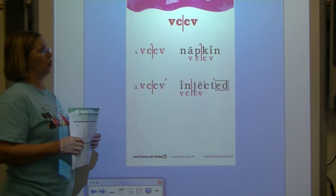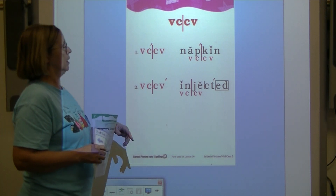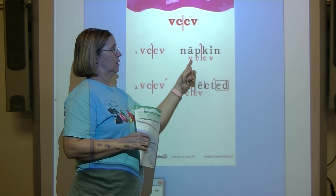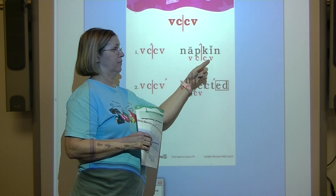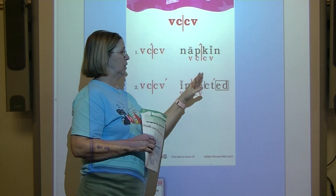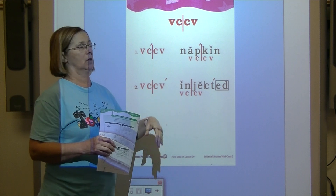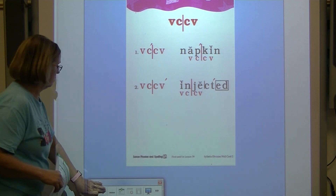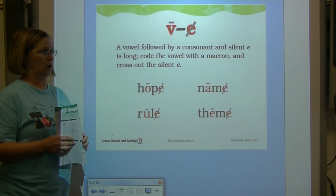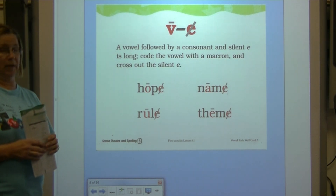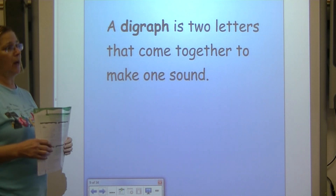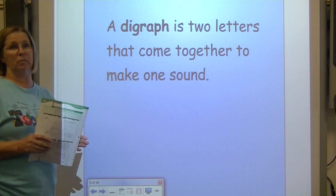Here's our syllable division chart for the VCCV pattern. If you have two vowels spread out in the word, write a V under each vowel. Look between them — if you have two consonants, put two C's. Divide between the consonants and that gives you each syllable. A vowel followed by a consonant and sneaky E is long; code the vowel with a macron and mark out sneaky E. A digraph is two letters that come together to make one sound.